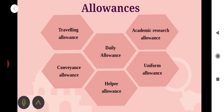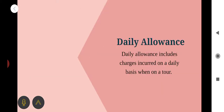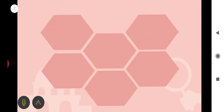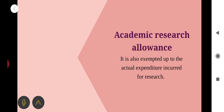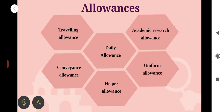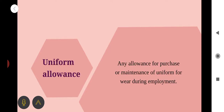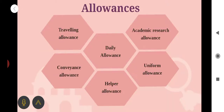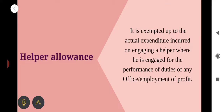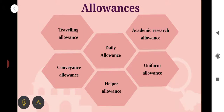Next, daily allowance — it covers charges incurred on a daily basis when on a tour. Then, academic research allowance — it is also exempted up to actual expenditure incurred for research. Next, uniform allowance — the amount offered for purchase or maintenance of uniform for wearing during employment. Next, helper allowance — it is exempted up to the actual expenditure incurred on engaging a helper where the helper is engaged for the performance of duties of any office.